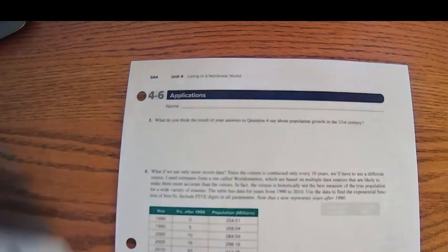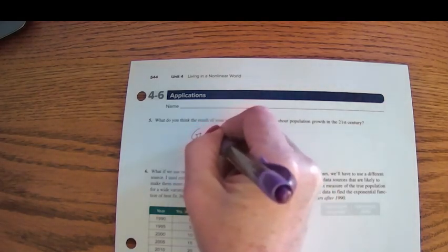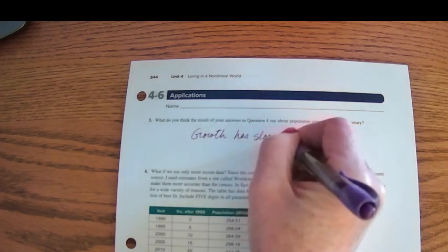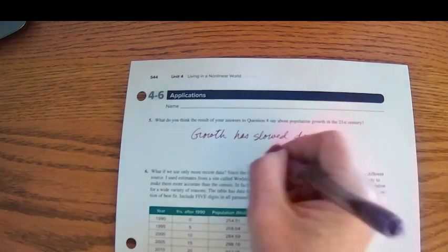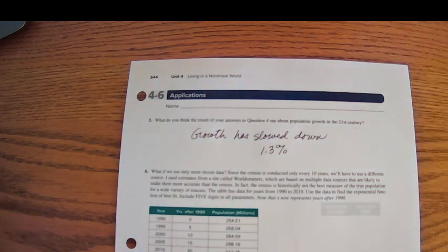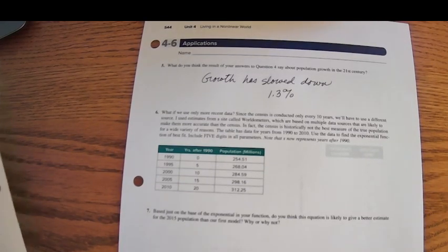So question number five says, what do you think the result of your answer four says about population growth in the 21st century? All right, well, that means population growth must have slowed down. It did not continue at 1.3% growth 115 years after 1900.